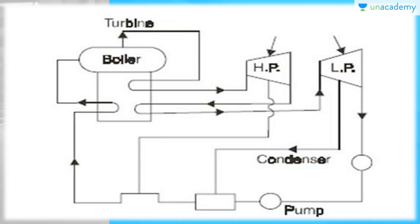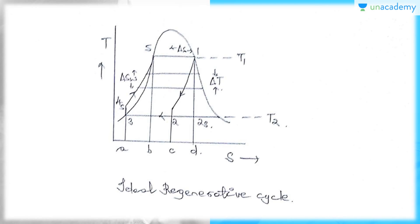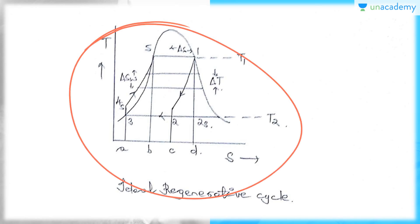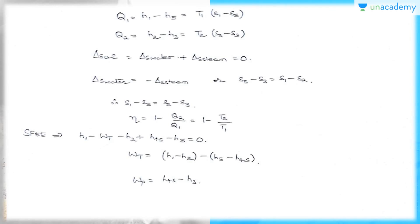You can see the flow diagram of an ideal regenerative cycle. The efficiency is equal to the Carnot cycle, the pump work remains the same as the Rankine cycle, and the net work output in an ideal regenerative cycle is less. However, this cycle is not practicable because reversible heat transfer cannot be realized in finite time, the heat exchanger in the turbine is mechanically impracticable, and the moisture content of the steam in the turbine is high, leading to excessive corrosion. You can see the T-S diagram of an ideal regenerative cycle showing delta T, delta SW, and delta S area, as well as the formula for pump work and turbine work.